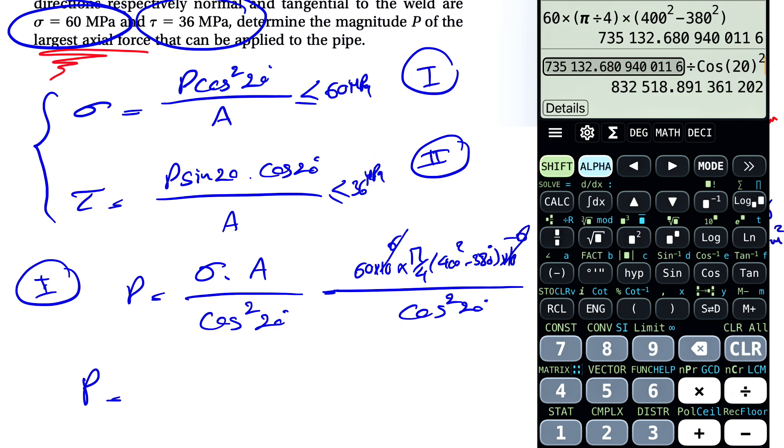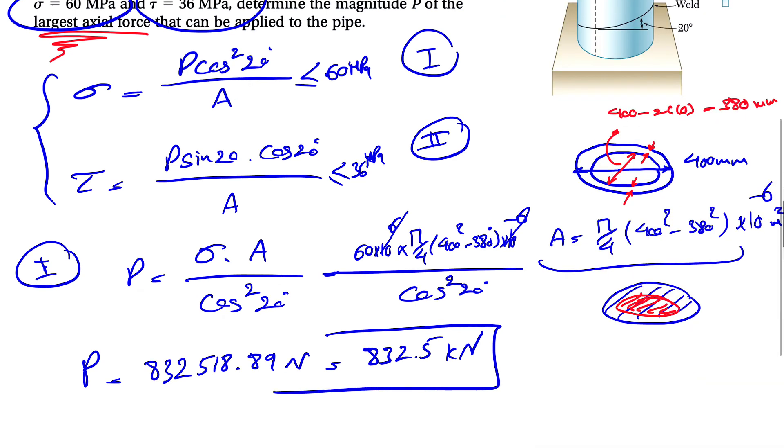So basically we have 60 times pi divided by 4 times 400 squared minus 380 squared. And we're going to divide that by cosine squared of 20 degrees. So that's going to be 832,518.89 Newton or 832.5 kilonewtons. So that's our first P.